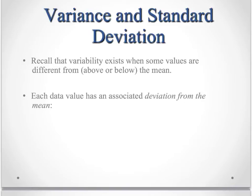Now remember we said at the beginning that variability exists when some values are not equal to the mean when they're either above or below. So we can look at each value and see how far away from the mean each value is. And those are what we call deviations from the mean. Which means how far away is it?